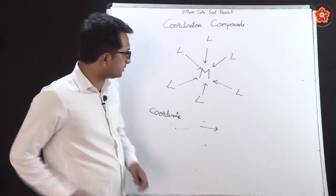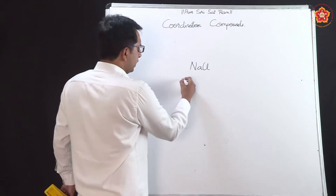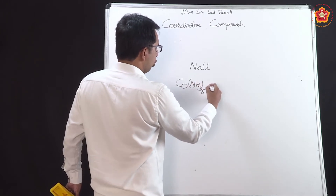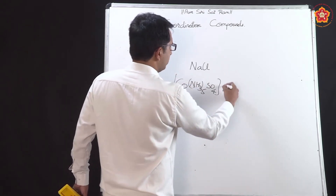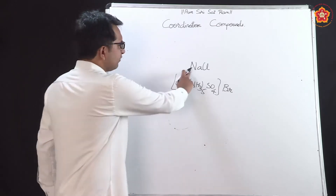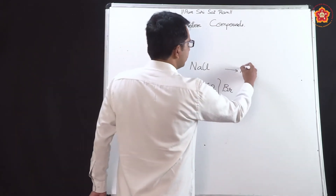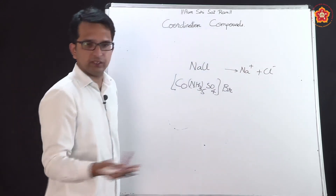Let us see this through an example. Take the simple example of NaCl. When taken into solution, it splits up into Na⁺ and Cl⁻ — a very well-known splitting.